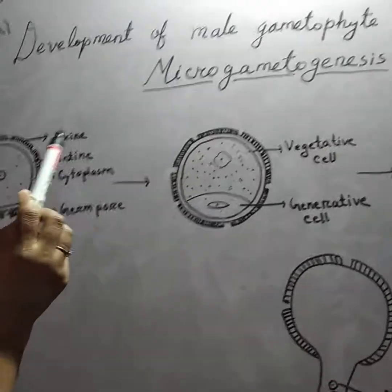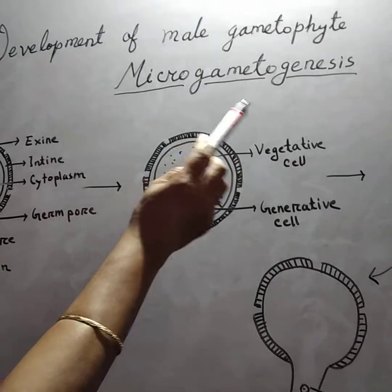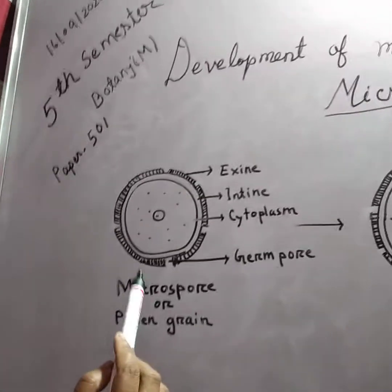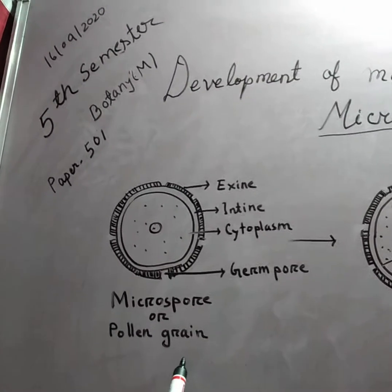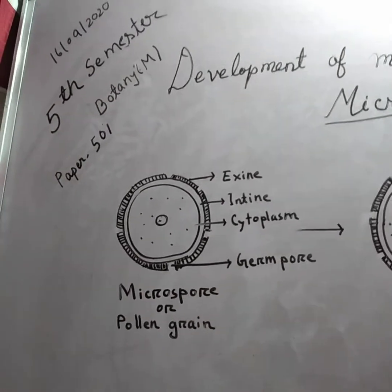Now we start development of male gametophyte, i.e., microgametogenesis. Microspore or pollen grain is the first cell of male gametophyte.